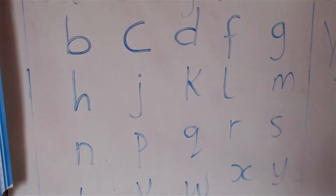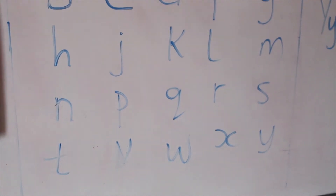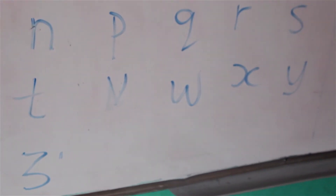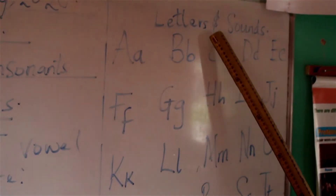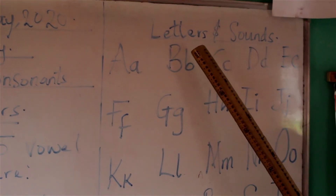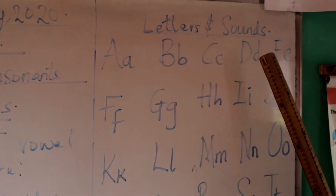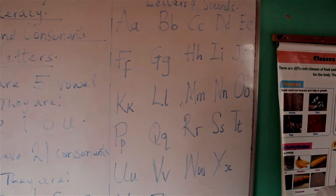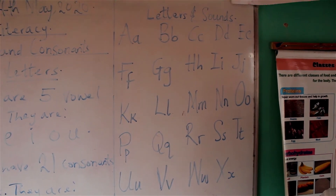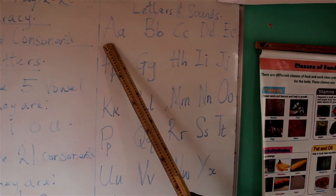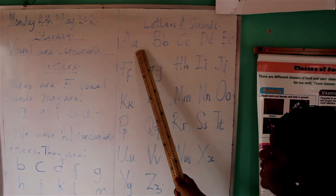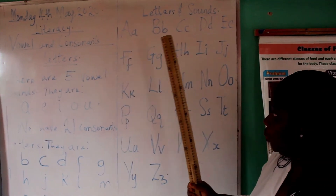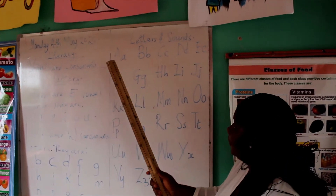Now let's go to another topic, still under the English alphabet, and that is our letters and sounds. Letters and sounds. Can somebody tell me what happened here on the board? We have the letters and the sounds together. So when you want to read this, this is what you simply say.